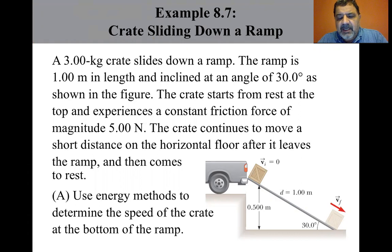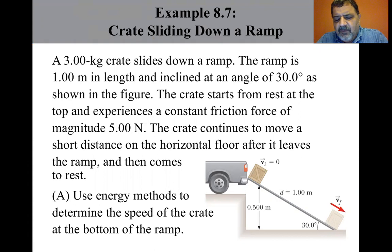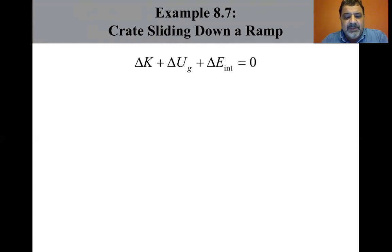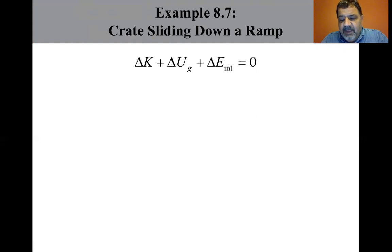Imagine the crate sliding down the ramp. The larger the friction force, the more slowly the crate will slide. We identify the crate, the surface, and the Earth as an isolated system for energy with a non-conservative force acting on it. Because V_initial equals zero, the initial kinetic energy when the crate is at the top of the ramp is zero. If the y-coordinate is measured from the bottom of the ramp, then y_initial equals 0.5 meters.